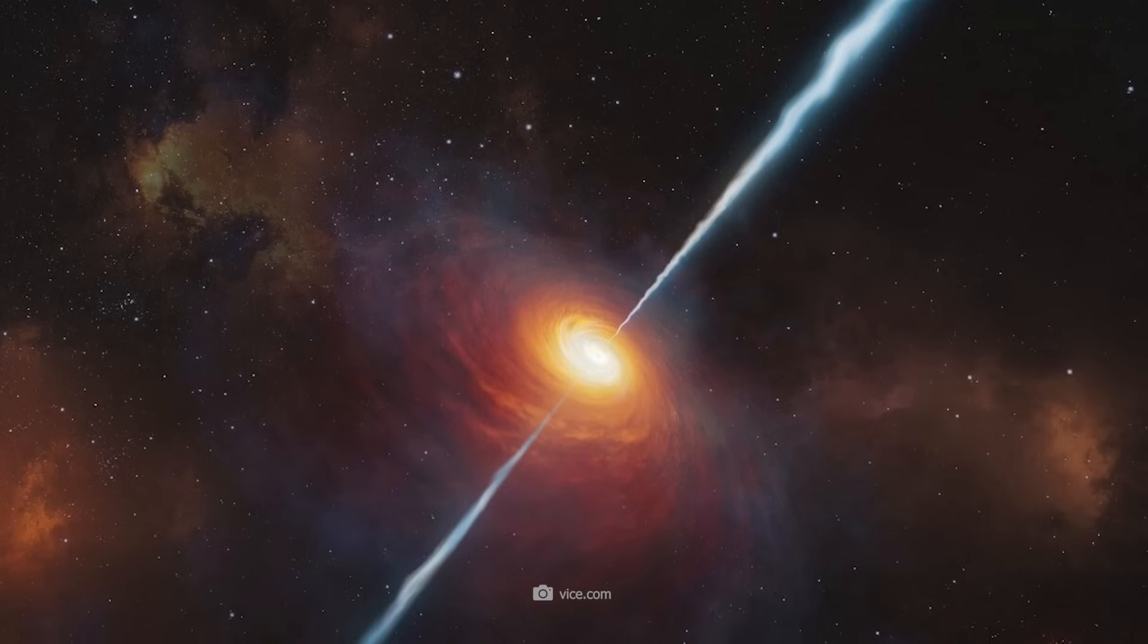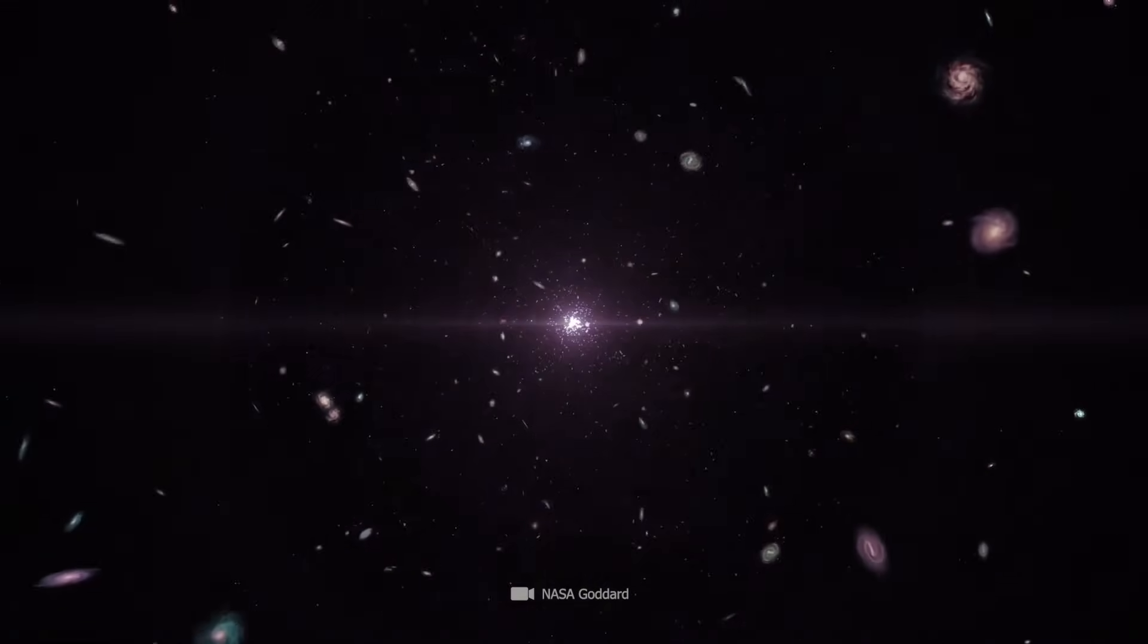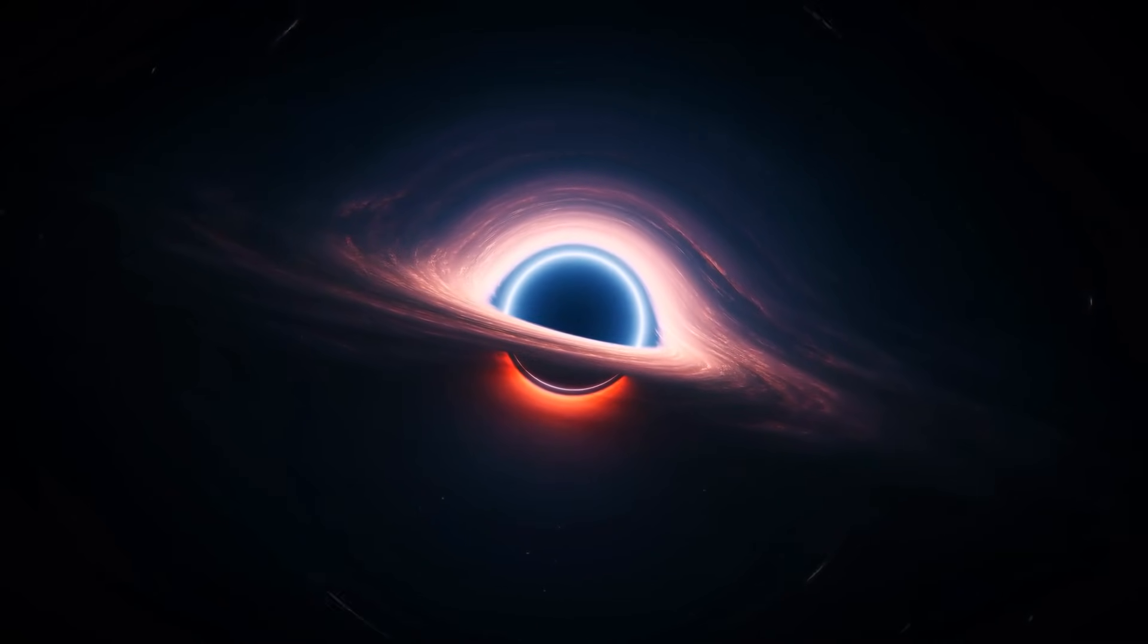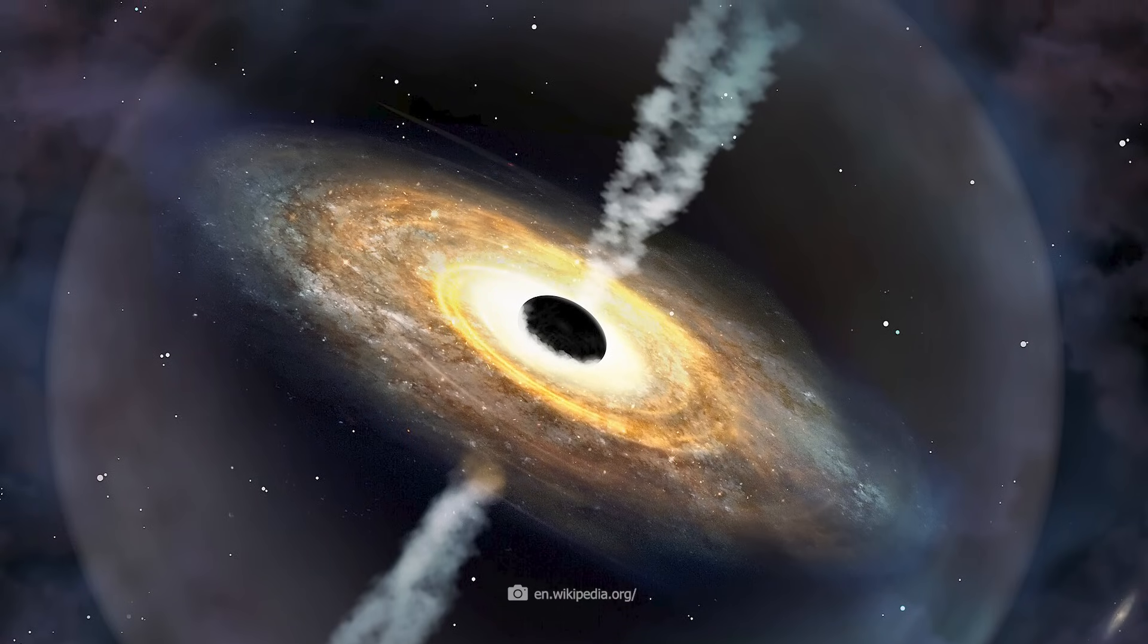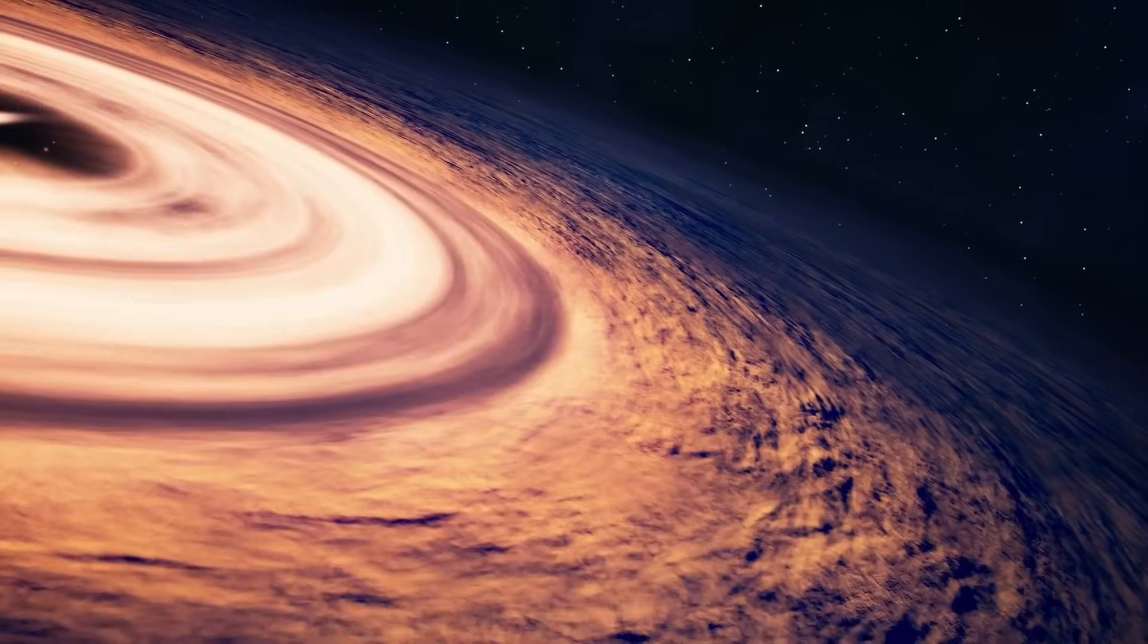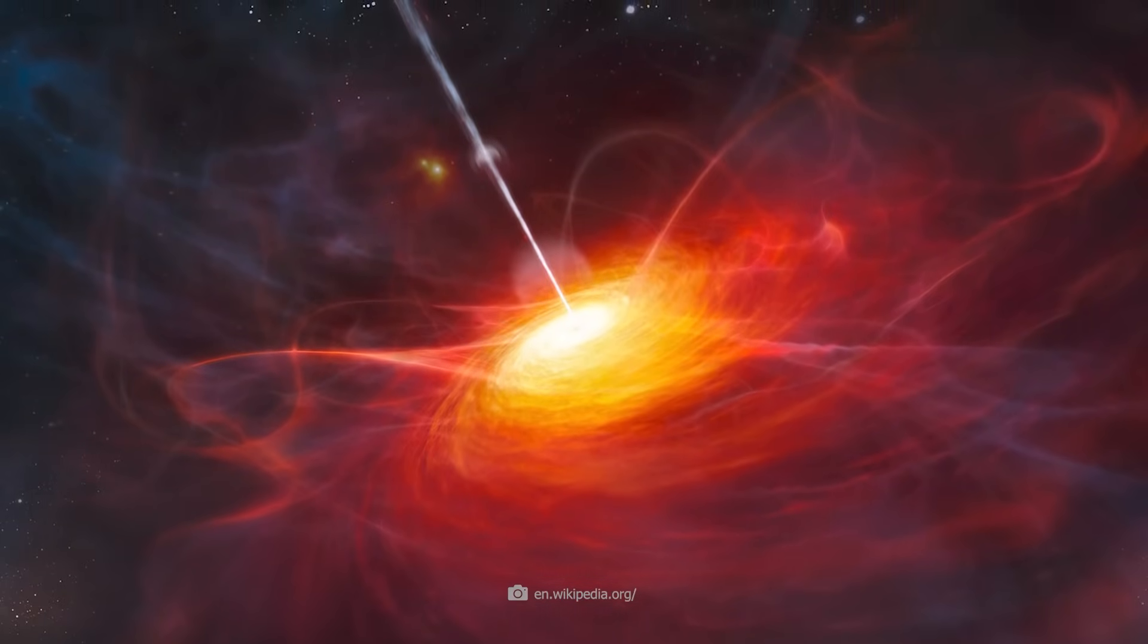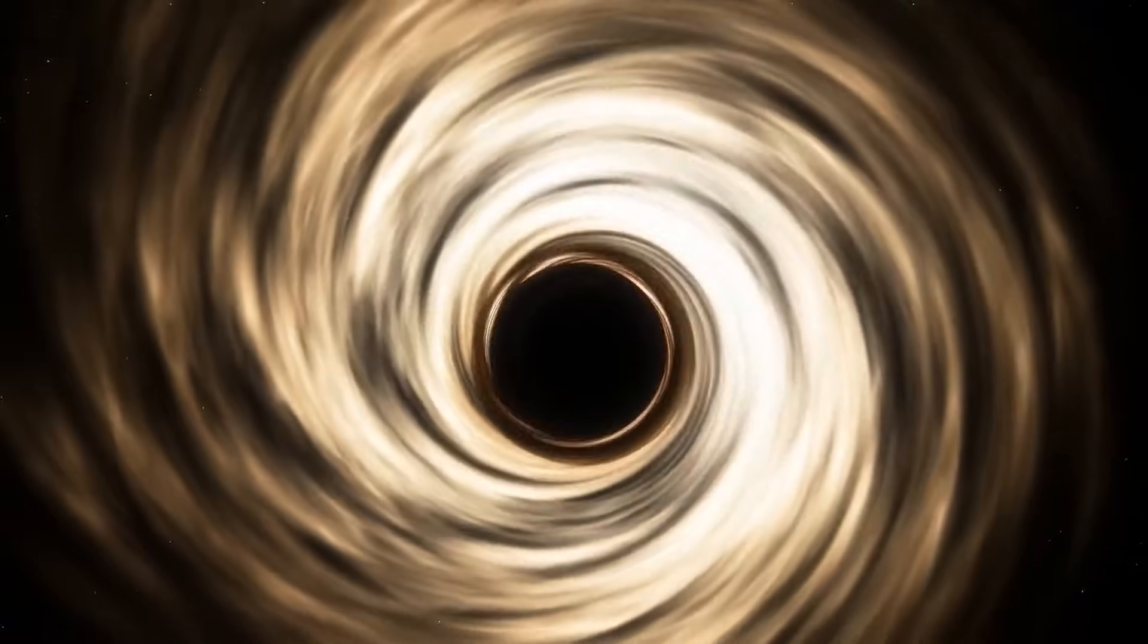The quasar trio consists of J0313-1806, which already existed 670 million years after the Big Bang and whose black hole is 1.6 billion times more massive than our sun. J1007-2115 was discovered around 700 million years after the Big Bang and is 1.5 billion times more massive than our sun. The third in the group is J1342-0928 and existed 690 million years after the Big Bang. This galactic center has 800 million times the mass of our sun.